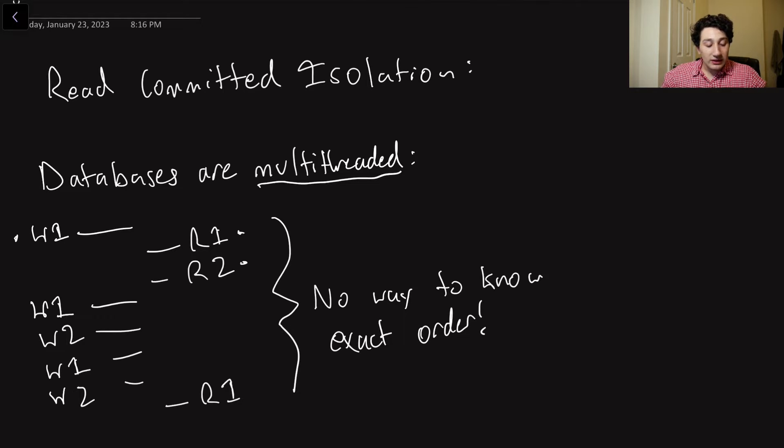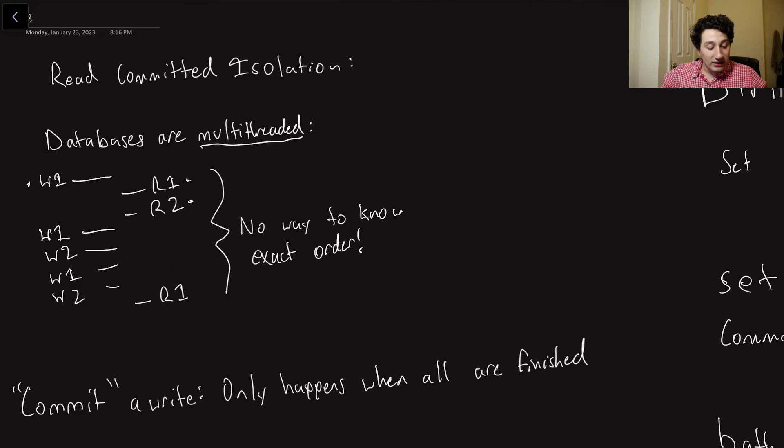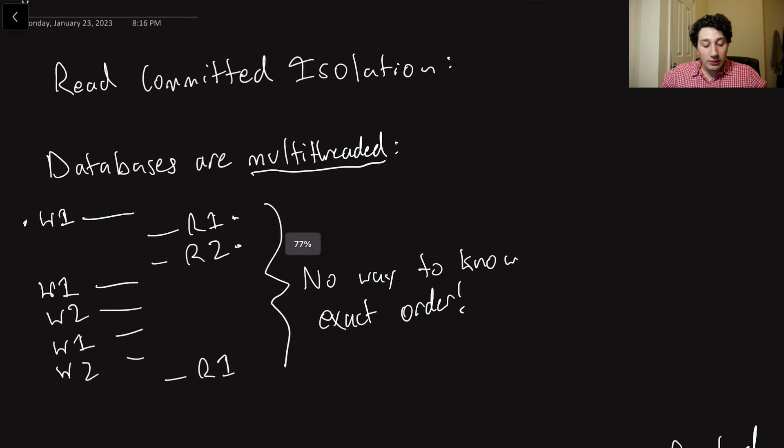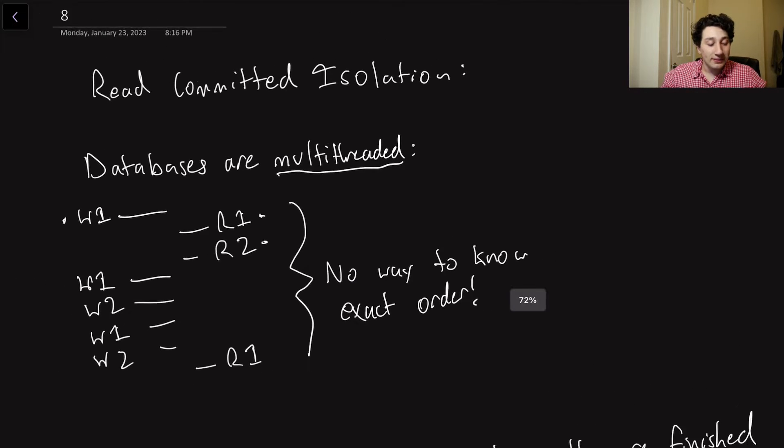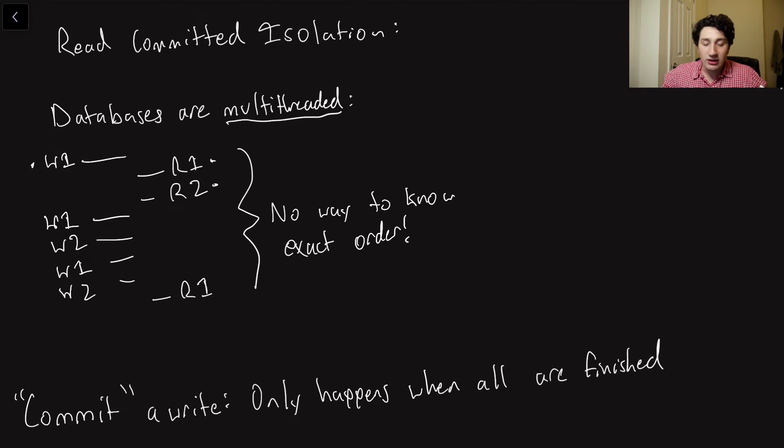So basically what this does is it introduces a lot of race conditions. So before we talk about some examples of race conditions that we might see in a database, I just want to introduce some terminology, which I've kind of mentioned in the past, but let's go ahead and make it official.